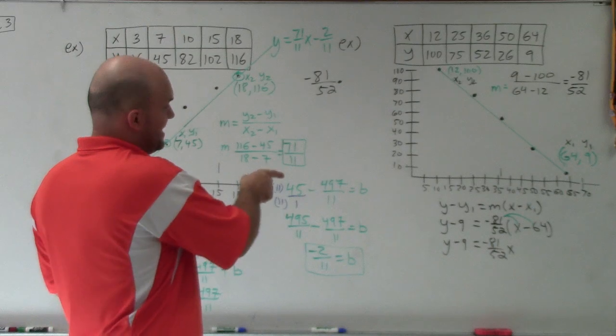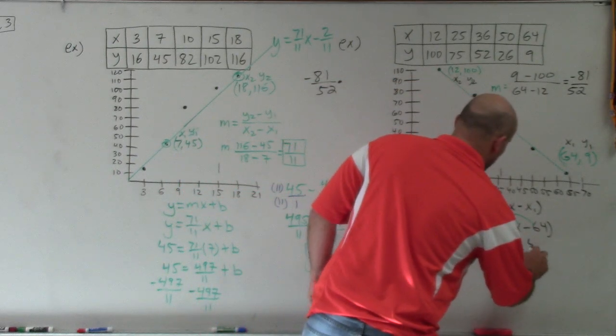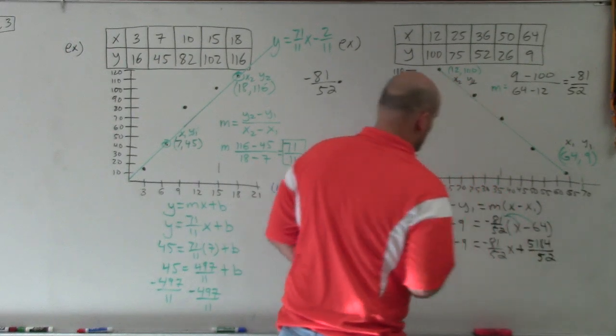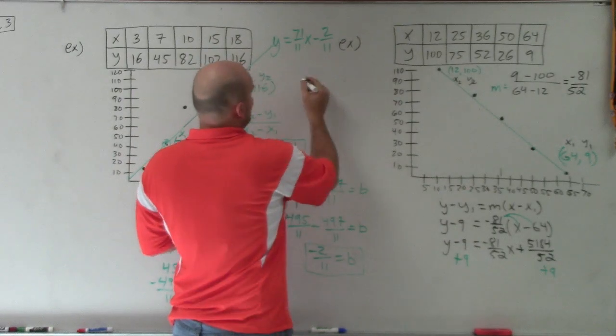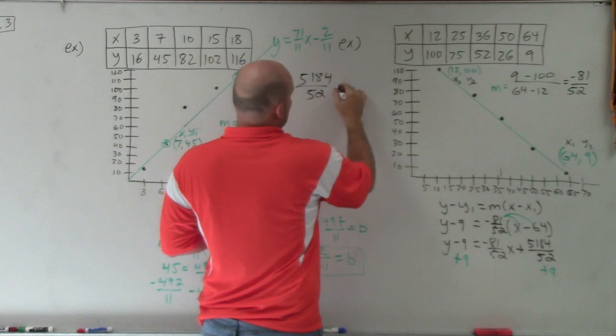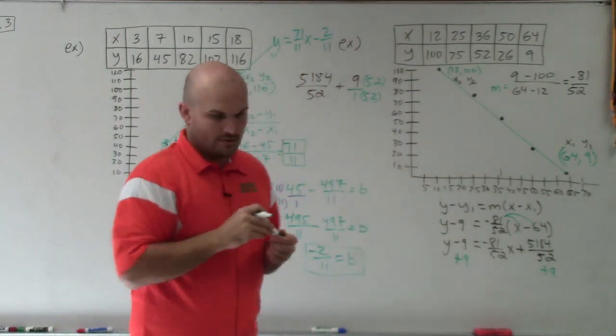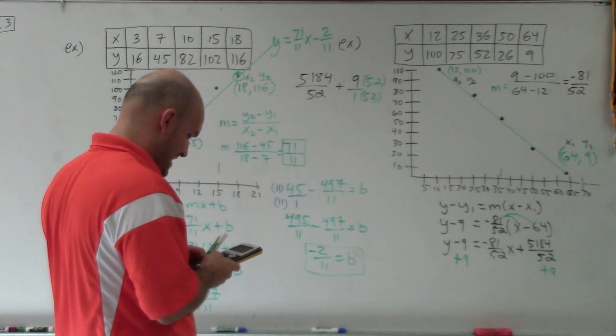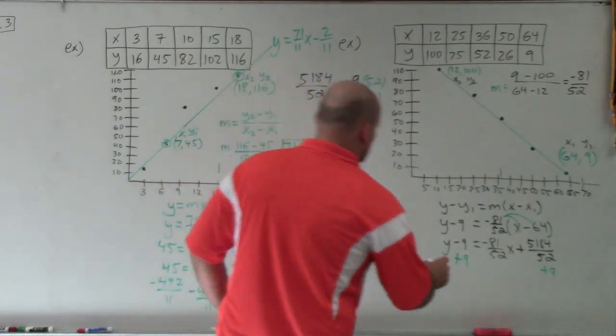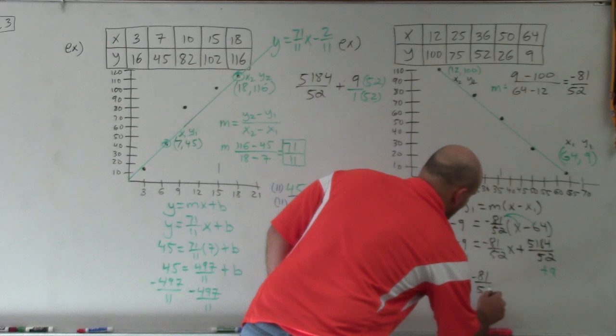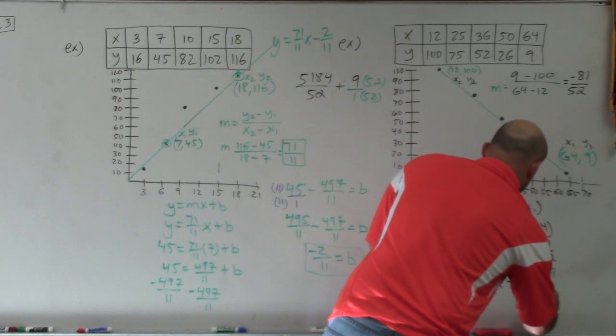When doing that, I obtain y minus 9 equals negative 81 over 52x. Then I need to do negative 81 over 52 times a negative 64. So it's minus a negative. So it's going to be 81 times 64 is 5,184. So it's going to be a positive 5,184 all over 52. Then the last thing I need to do is add a 9. So now I need to add a 9 to that fraction. So basically what I have here is 5,184 over 52 plus 9. Well, I put 9 over 1, and then I multiply by 52 on the top and bottom. So now I need to do 9 times 52 and then add that to 5,184, and I get 5,652.